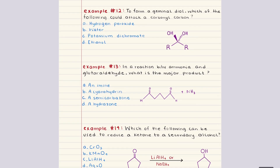Problem twelve says to form a geminal diol, which of the following could attack a carbonyl carbon? The carbonyl carbon is electrophilic and susceptible to nucleophilic attack. In a hydration reaction, water adds to a carbonyl, forming a geminal diol — a compound with two hydroxyl groups on the same carbon. Therefore, the correct answer for twelve is B.